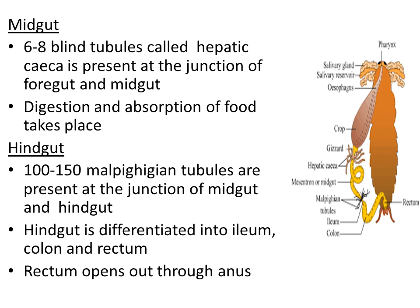This completes the digestive system of cockroach. We have seen the three regions: foregut, midgut, and hindgut. One important point: the foregut is covered on the outside by cuticle. This cuticle is present from the pharynx region to the gizzard — it is an outer protective covering of the alimentary canal in the foregut region.